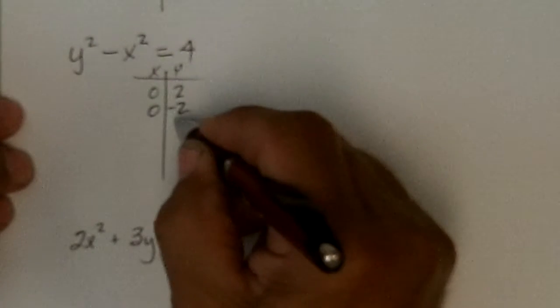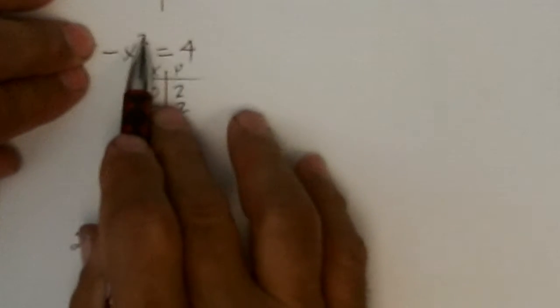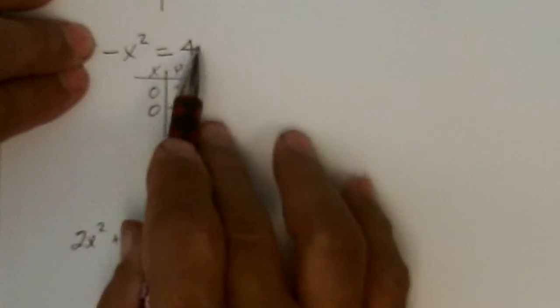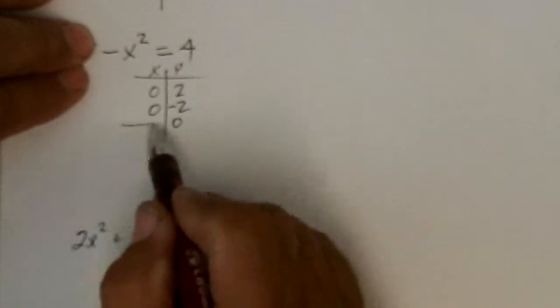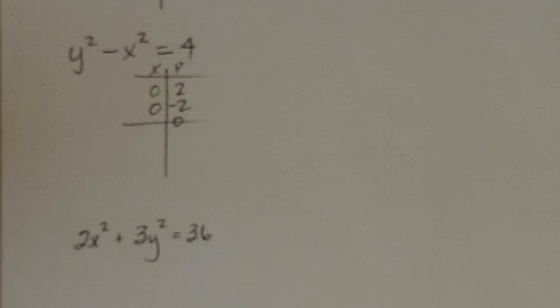Let's do the x intercepts. If I put in 0 for y, I get negative x squared equals 4. If I divide by negative 1, I get x squared equals negative 4. Can't happen. No x intercepts. It doesn't cross the x-axis. So, this curve can't touch the x-axis.